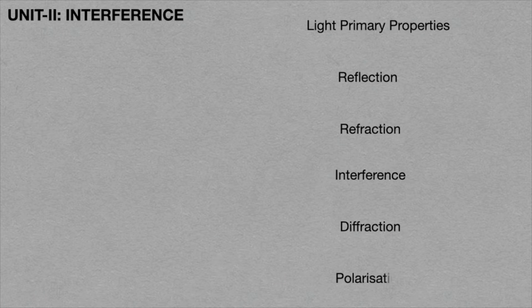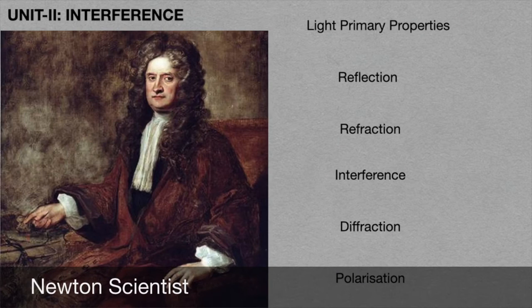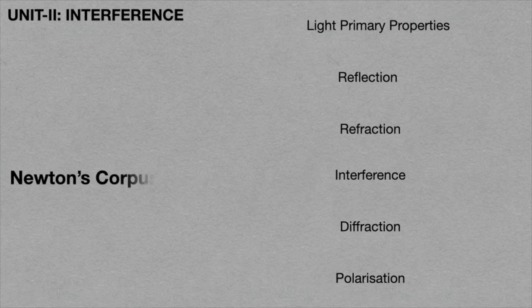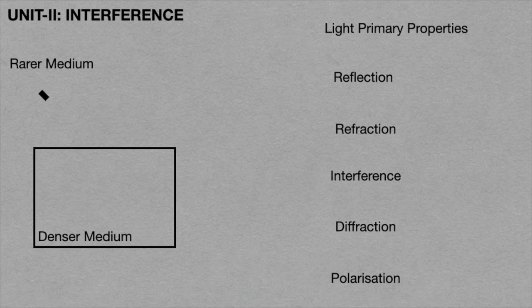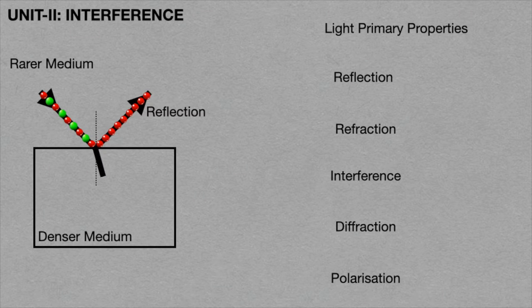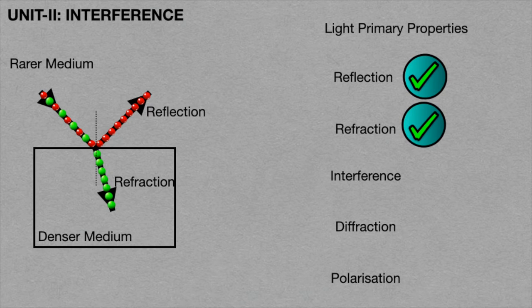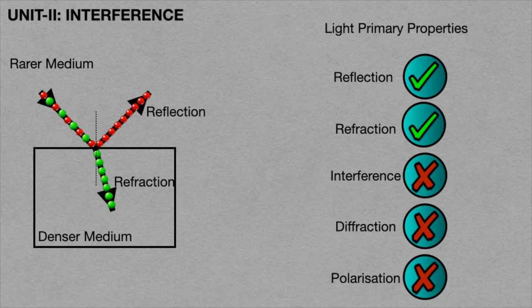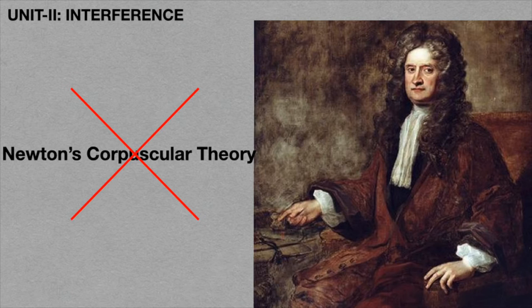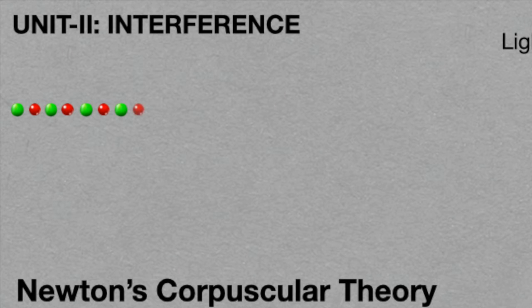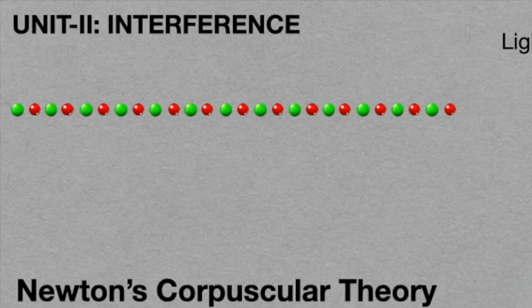In order to explain the primary properties of light, such as reflection, refraction, interference, diffraction, and polarization, Newton proposed a new theory called the corpuscular theory for light. Based on Newton's corpuscular theory, he explained reflection and refraction, but he could not explain the remaining properties such as interference, diffraction, and polarization. Hence this theory is a failure. According to this corpuscular theory, light consists of particles and always travels in a straight line direction.